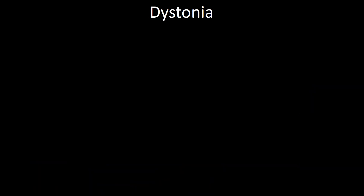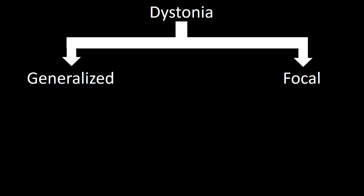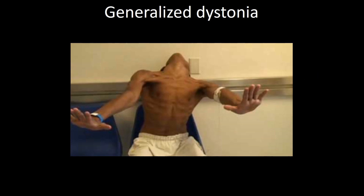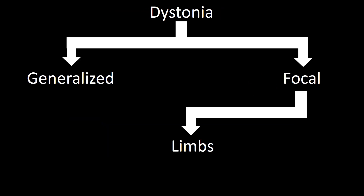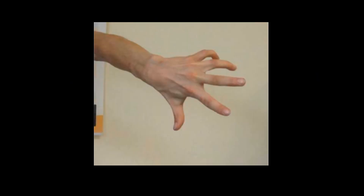Dystonia is defined as an involuntary contraction of agonist and antagonist muscles, leading to a position of extreme flexion or extension. Dystonia can be generalized or focal. Generalized dystonia can be an impressive condition involving the hands, shoulders, neck, and lower extremities. Focal dystonia can selectively involve the limbs or the face. The most frequent type of focal limb dystonia affects the hand and is often the first sign of extrapyramidal disease.